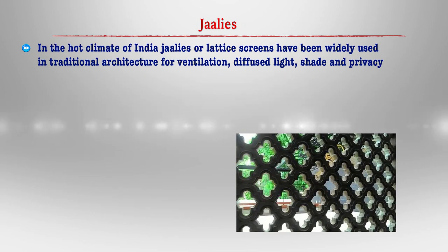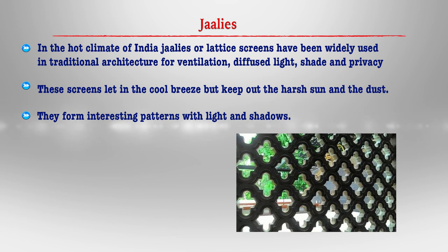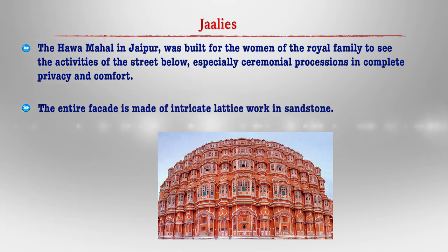The courtyard functioned as a connecting thermostat protecting the house from the extremes of temperature; dust storms would pass over with little impact and it helped create a pleasant environment by bringing nature into the home. Another important part of residential architecture is the jhali or screen, widely used in traditional architecture for ventilation, light, shade and privacy. These screens let in the cool breeze but kept out the harsh sun and dust. The Hawa Mahal in Jaipur was built for women of the royal family to see street activities and ceremonial processions in complete privacy. The entire façade is made up of intricate jali work in sandstone, and Mughal architecture also made use of beautiful jhalis in marble and sandstone for palaces and pavilions. Even today, many architects experiment with various forms of jhalis such as brick jhalis in their projects.